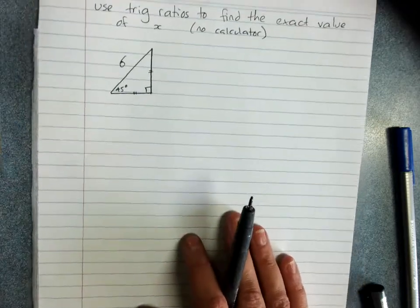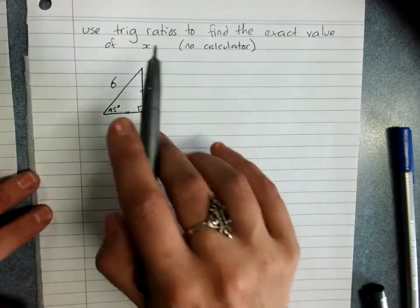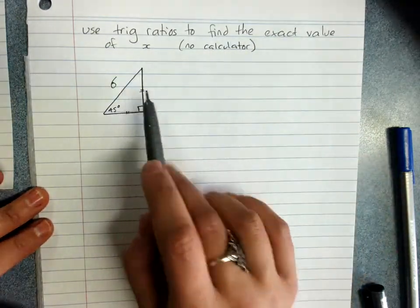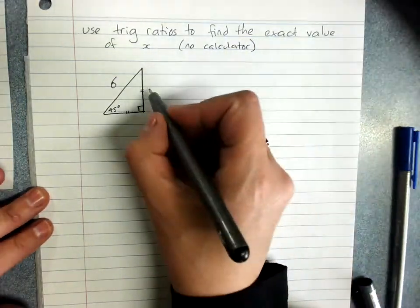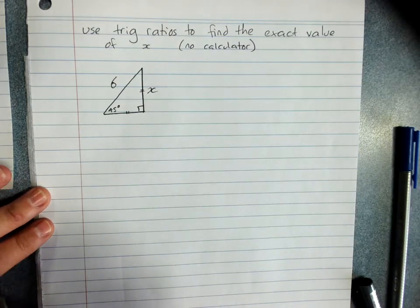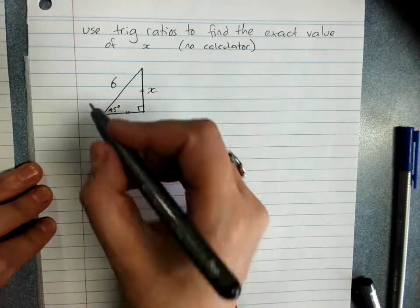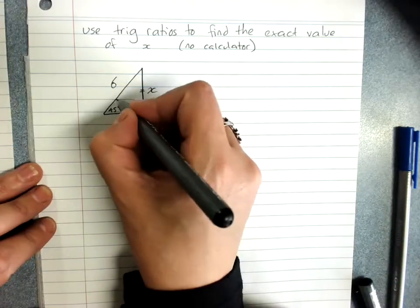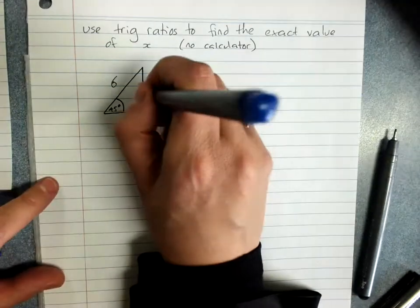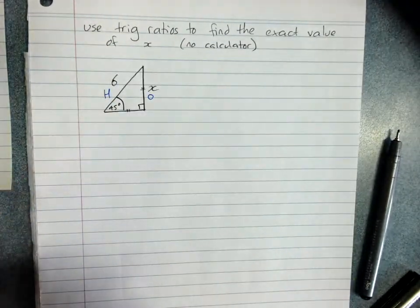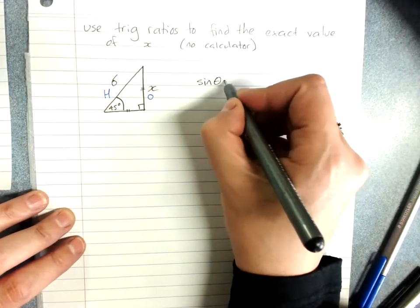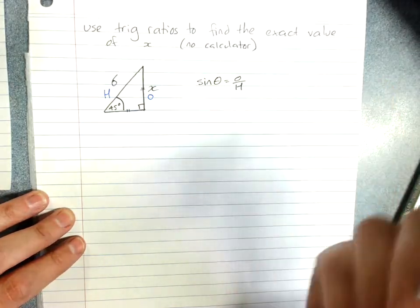And a question that you might use this for is when you're asked to use the trig ratios to find the exact value of x, which is our side length here, without a calculator. Let's make this our angle. Label your sides as you would for any problem. Opposite over hypotenuse. We're going to use sine. Sine theta is opposite over hypotenuse. We're still following our steps.